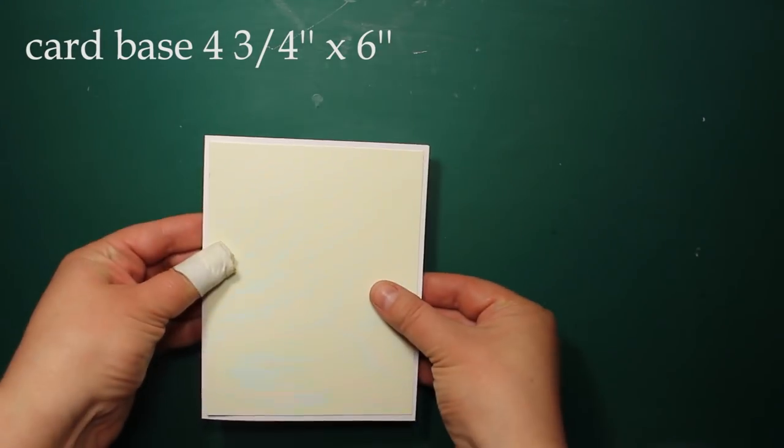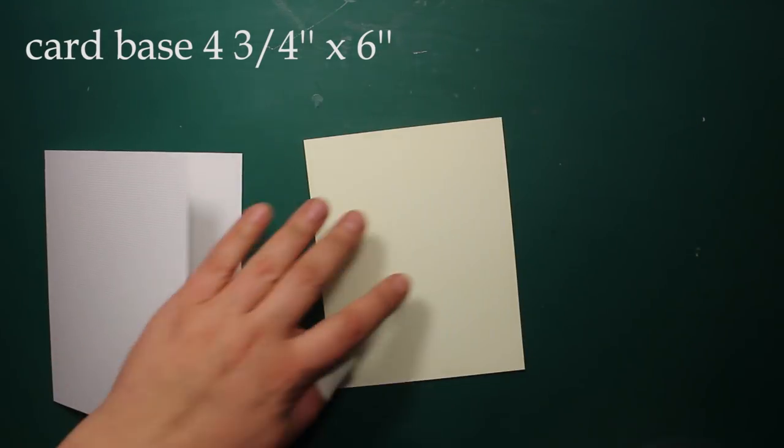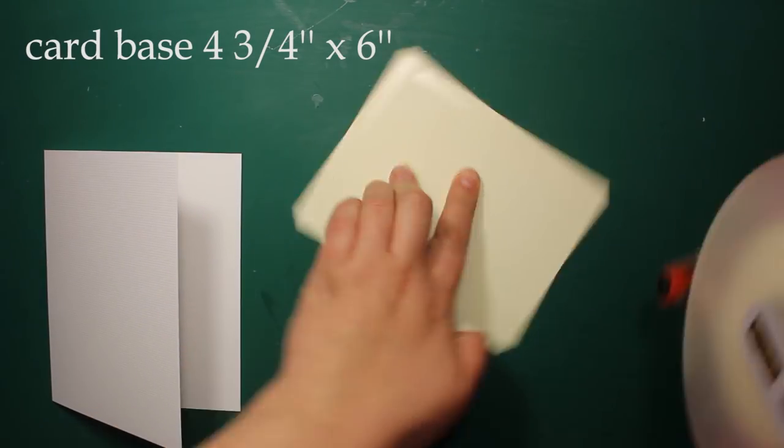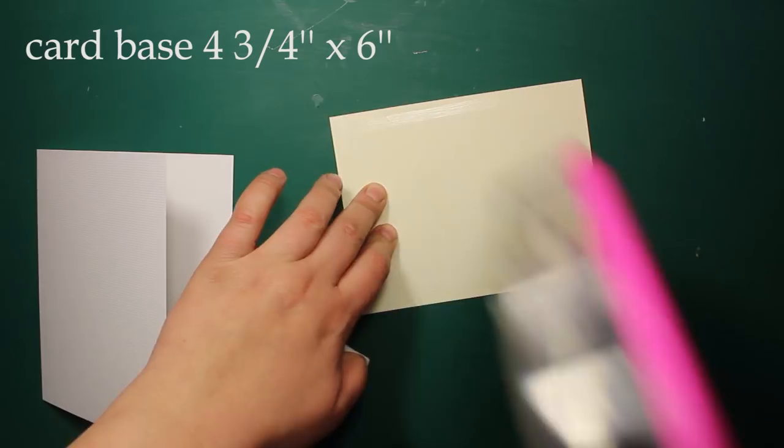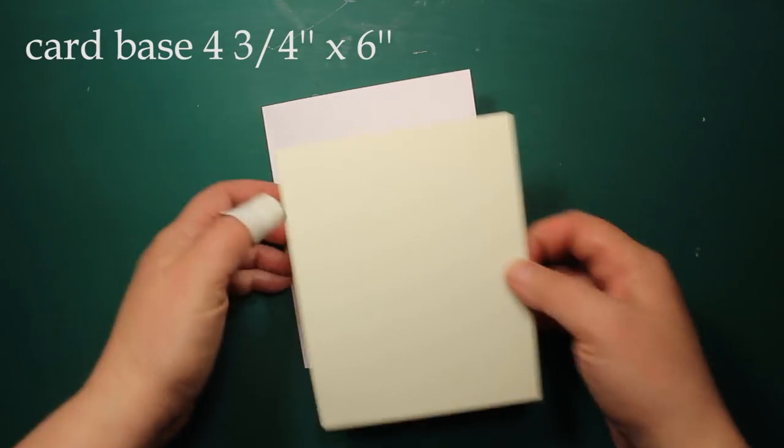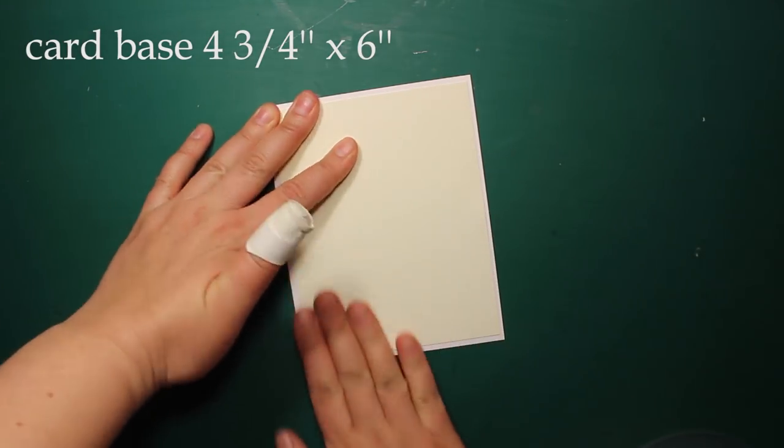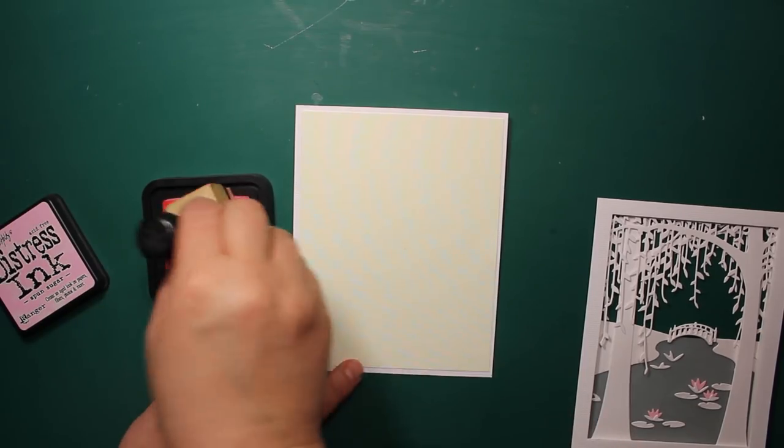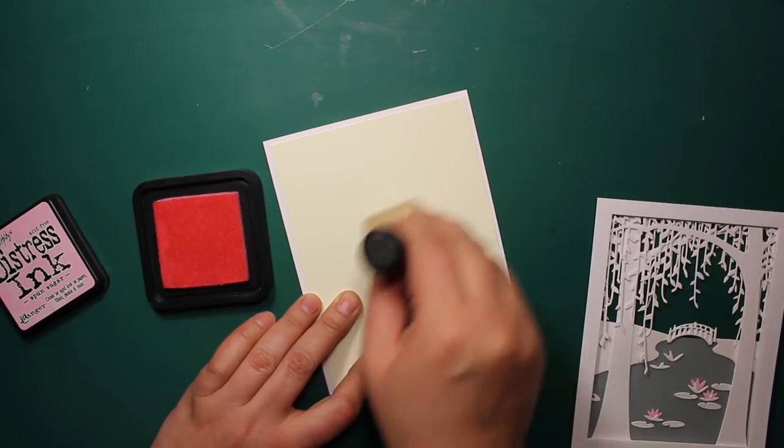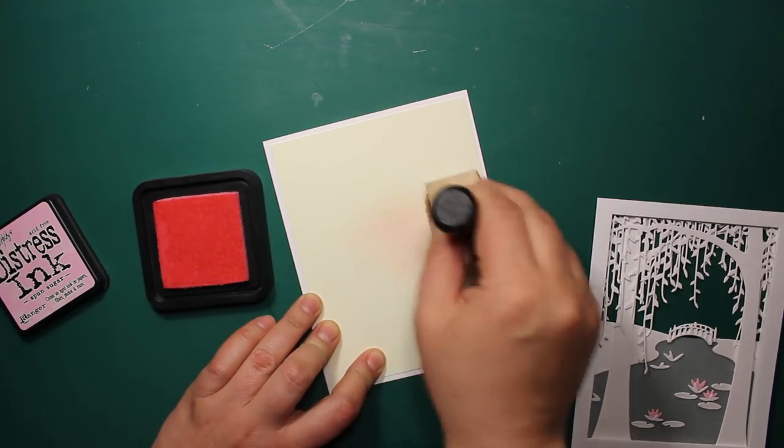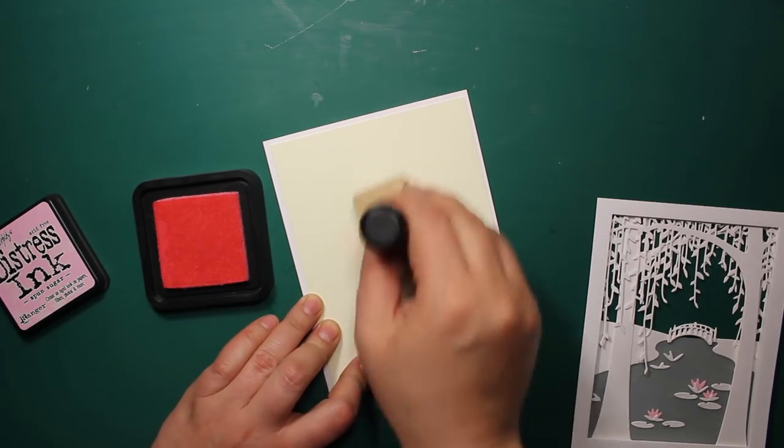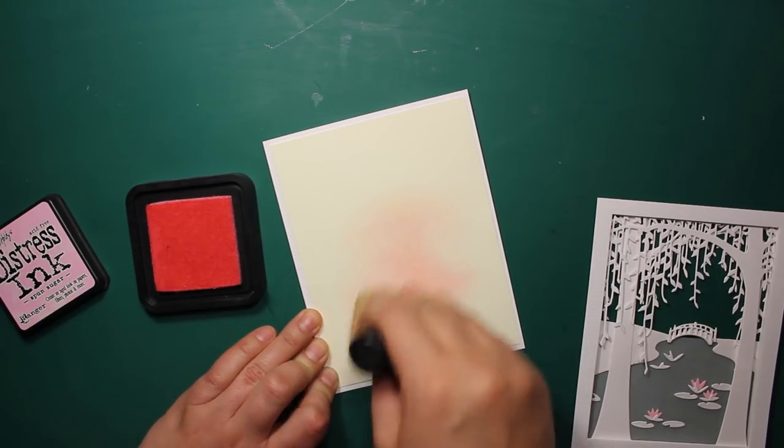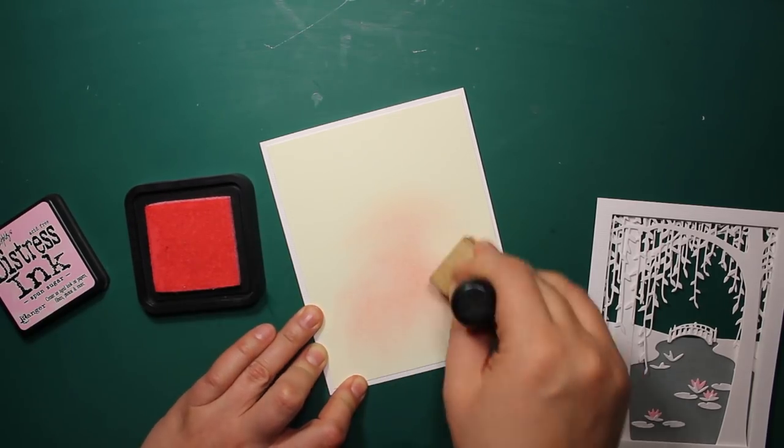This is my card base. It is the same size as the frame with the scene. I will be sticking a piece of ivory cardstock on top of it. It is a bit darker than the white cardstock I used for the scene and this way it helps all the elements to stand out more. I am also adding a faint touch of pink in the center and I try to blend it out really well. I am using the same ink that I colored the water lilies with.